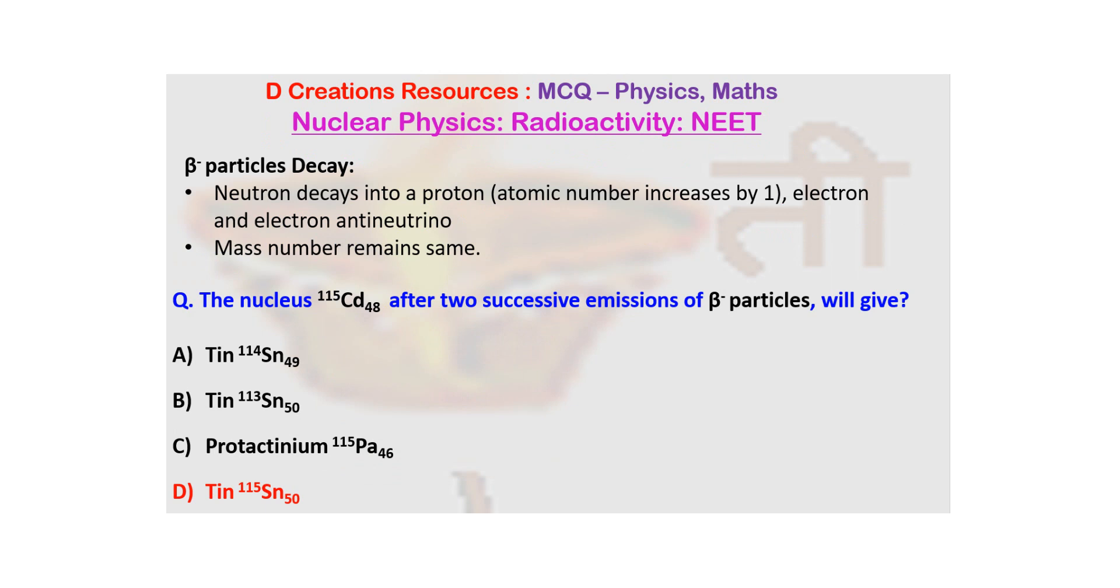So if someone asks you what is the difference between an electron and a beta minus particle, the answer is this is coming from within the nucleus, beta minus, while electrons are always outside the nucleus, although they are similar in terms of charge and mass.